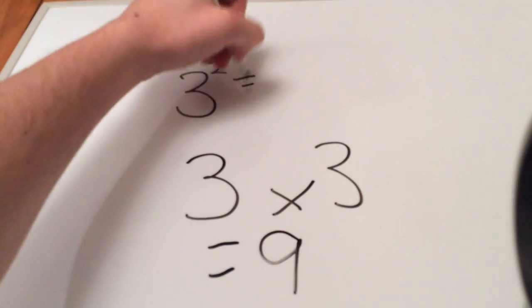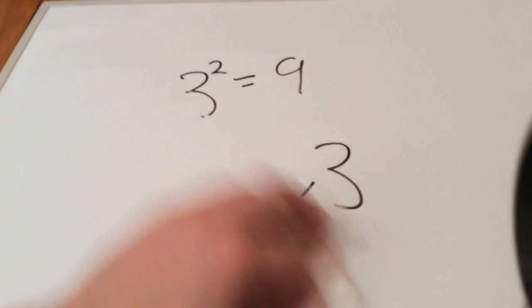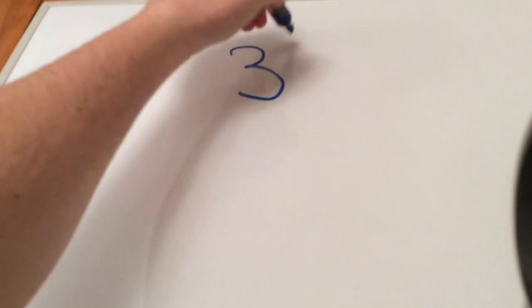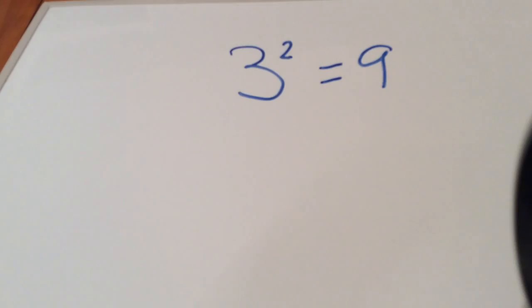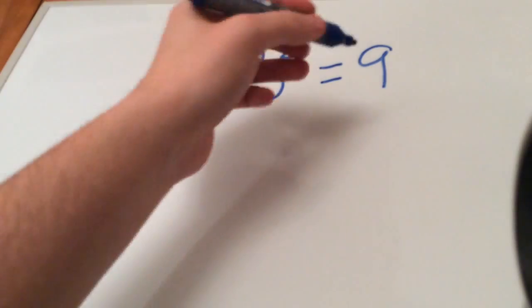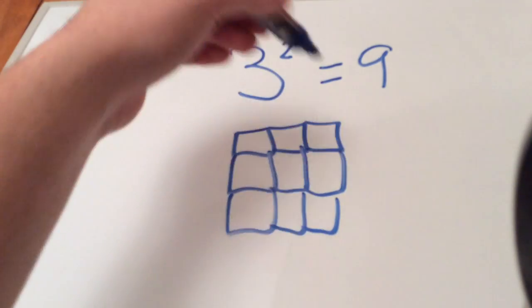But I know that some of you will be thinking, well why? Why is it squared? What's the shape got to do with it? Now we've said that 3 squared equals 9, and the reason 9 is now a square number is because if you had 9 blocks, you can make a square out of those blocks.